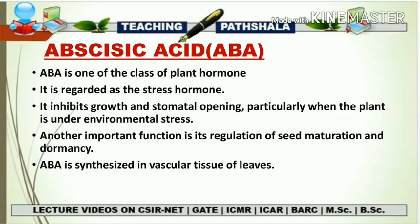When we studied about gibberellin, we saw that the breakdown of dormancy is performed by gibberellic acid. But the maintenance of seed dormancy is played by abscisic acid. So gibberellin breaks down seed dormancy whereas abscisic acid promotes it. The location of abscisic acid synthesis is in the vascular tissue of leaves, and it is transported via xylem, phloem, or parenchyma cells.